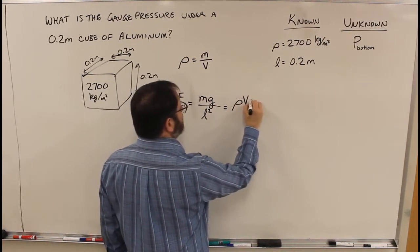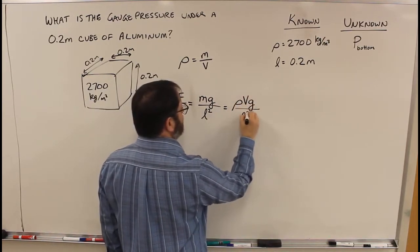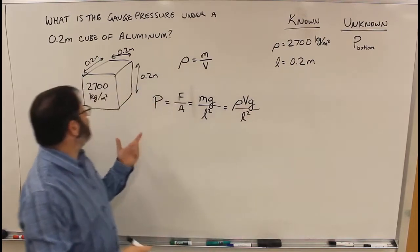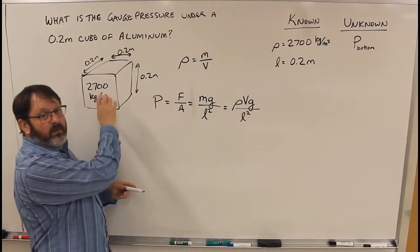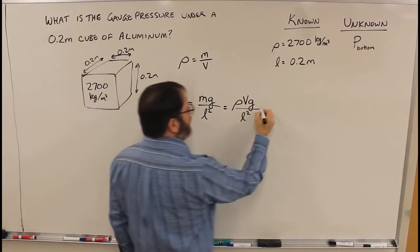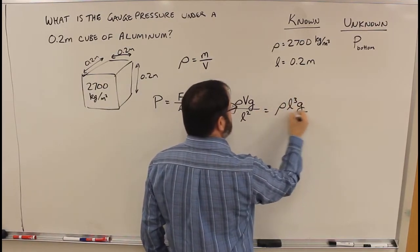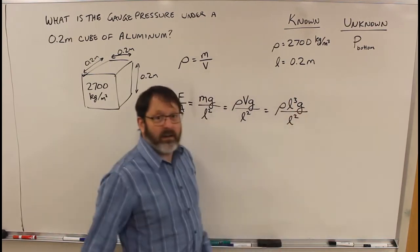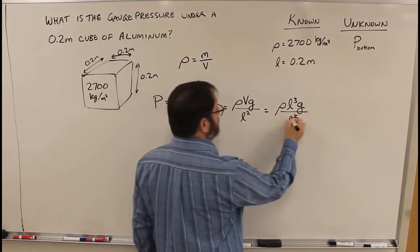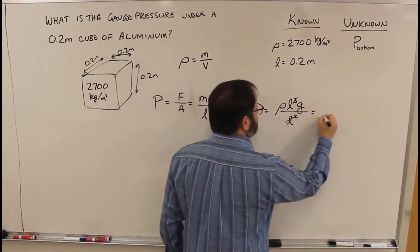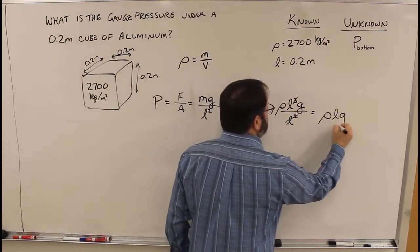So mass is rho V G over L squared. And the volume of a cube is length times width times height, so that is rho L cubed G over L squared. Some of the L's cancel, so that's rho L G.